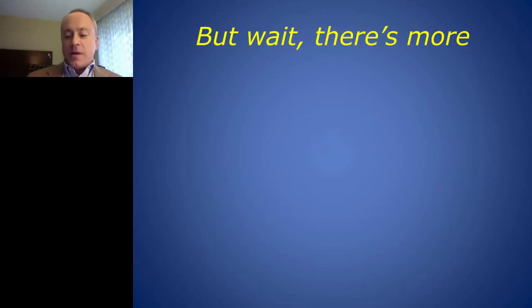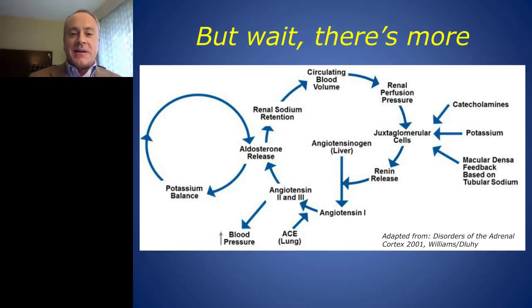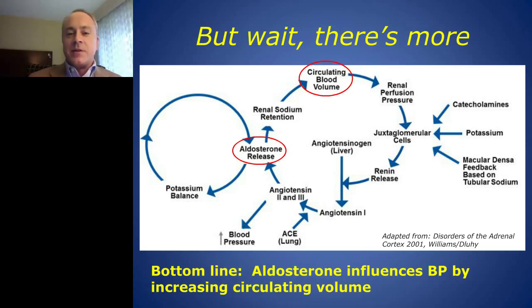There are feedback loops, of course. What I want to point out here is that aldosterone's main job is to increase circulating blood volume, where other hormones such as angiotensin 2 and sympathetically active hormones increase vascular tone to raise blood pressure. Aldosterone increases blood pressure by increasing the amount of circulating volume.